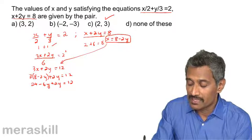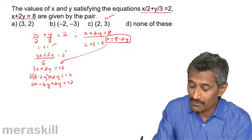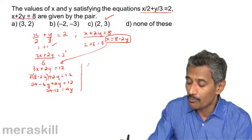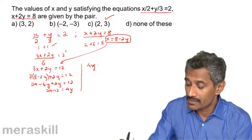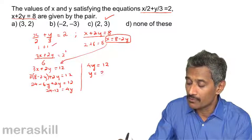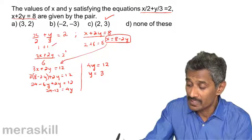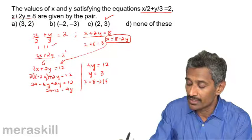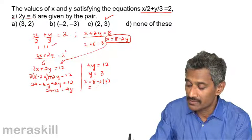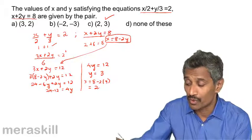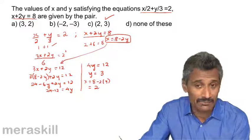Simplifying: minus 6y plus 2y is minus 4y, which goes to the other side as plus 4y. So 4y equals 24 minus 12 equals 12, giving y equals 12 by 4 equals 3. Hence x equals 8 minus 2 into 3 equals 8 minus 6 equals 2, so the solution is 3 comma 2.